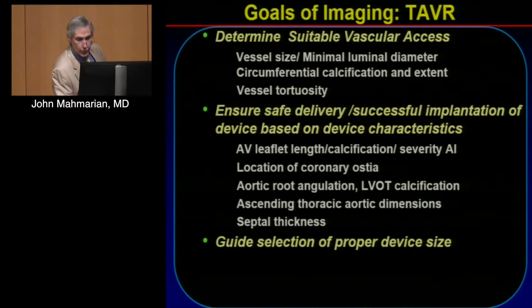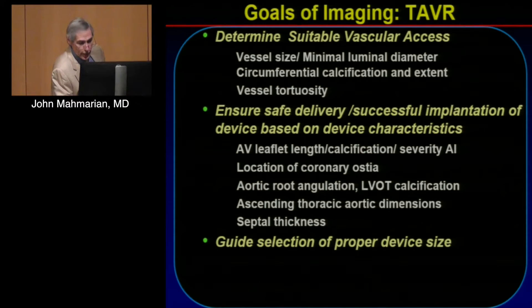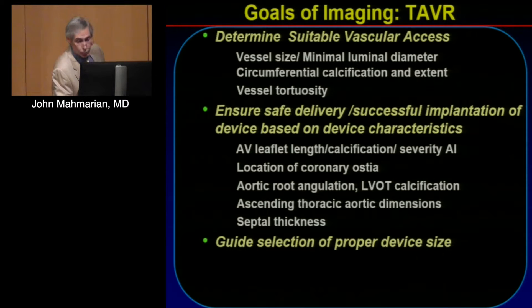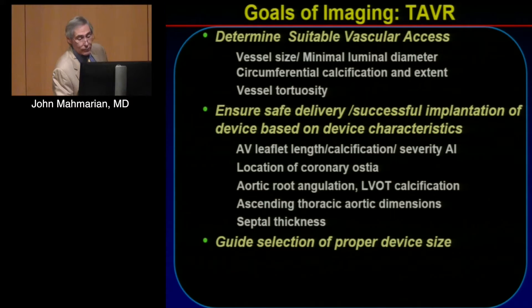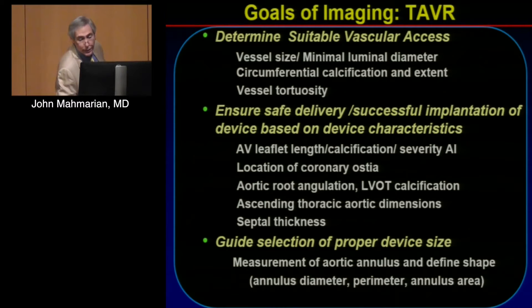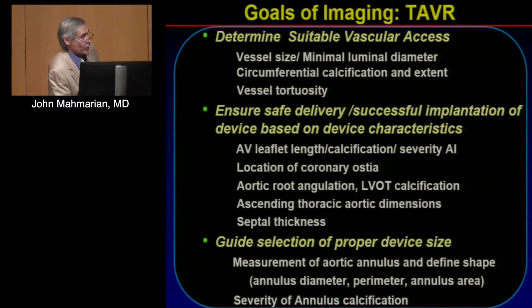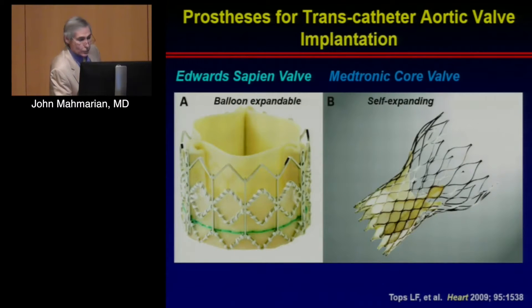To ensure safety, we want to know AV leaflet length, calcification, severity of aortic insufficiency, location of the coronary ostia so we don't occlude them, aortic root angulation, LVOT calcification, ascending thoracic aortic dimension, and septal thickness. We also want to measure the aortic annulus to define what kind of valve to put in — the diameter, perimeter, or area — and the severity of annulus calcification.